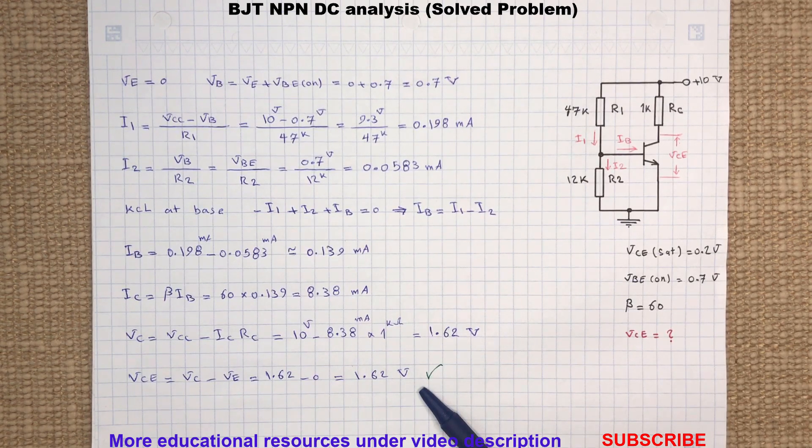As you can see here, the voltage across the collector-emitter is greater than the saturation voltage of 0.2 volts, so the transistor is in active region. Therefore, our assumption is validated.